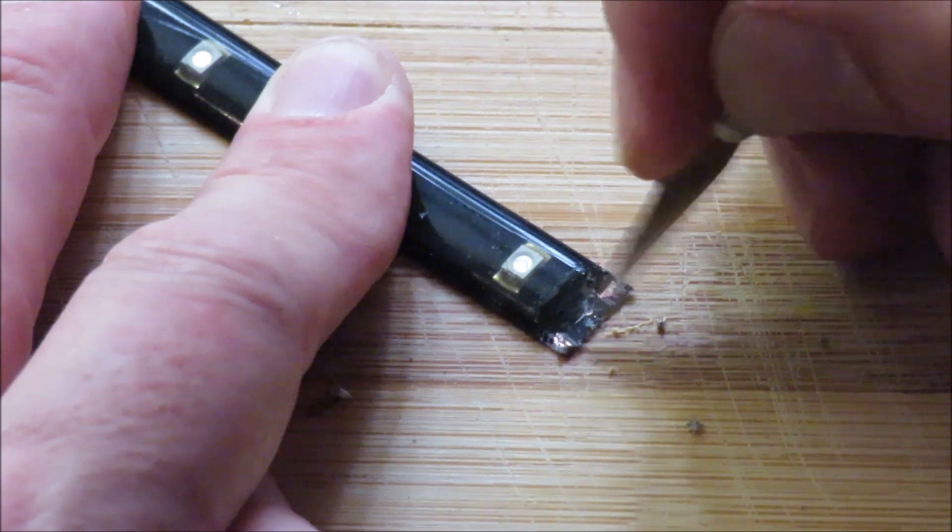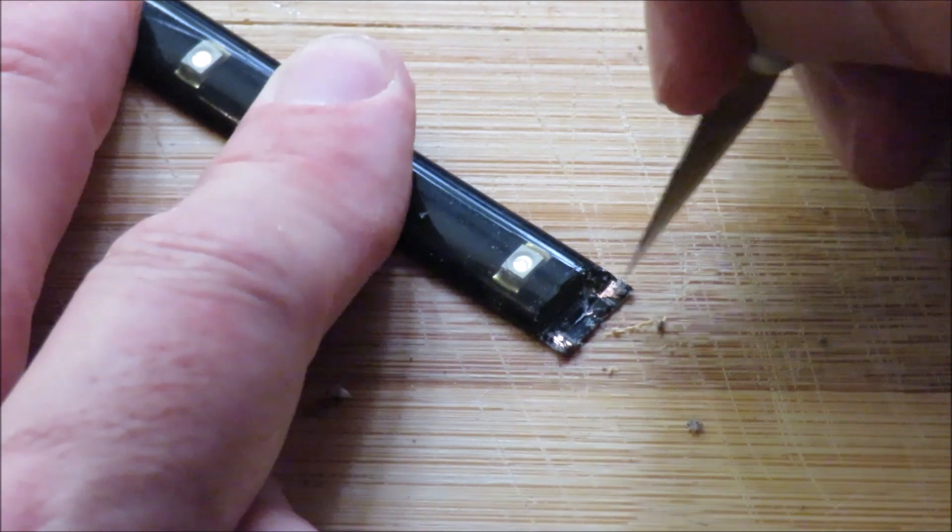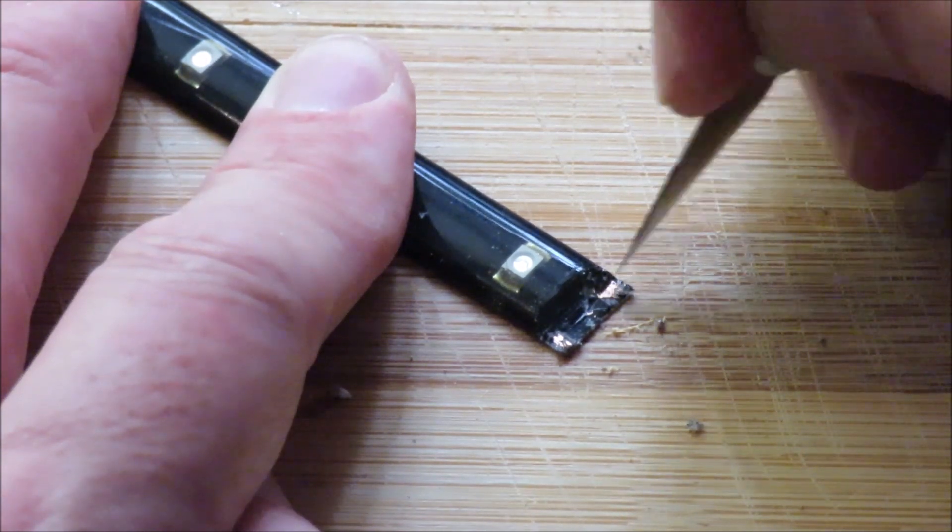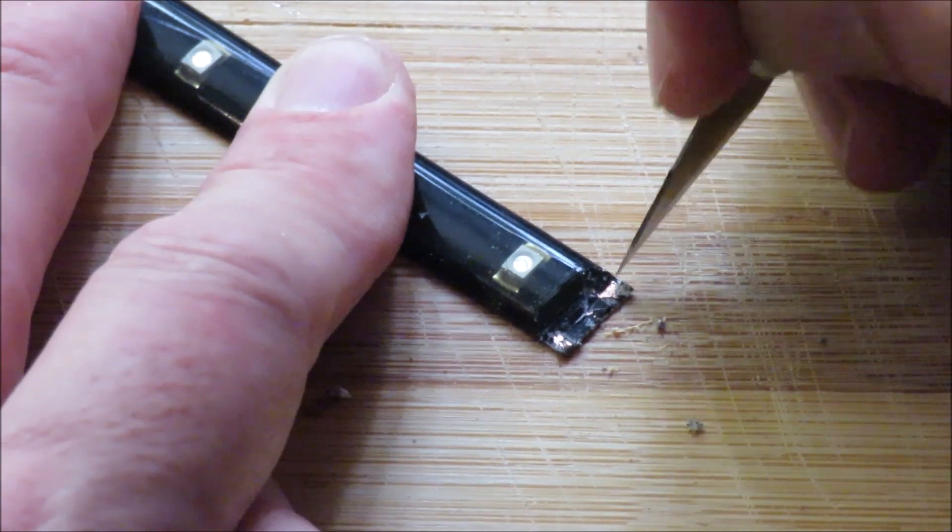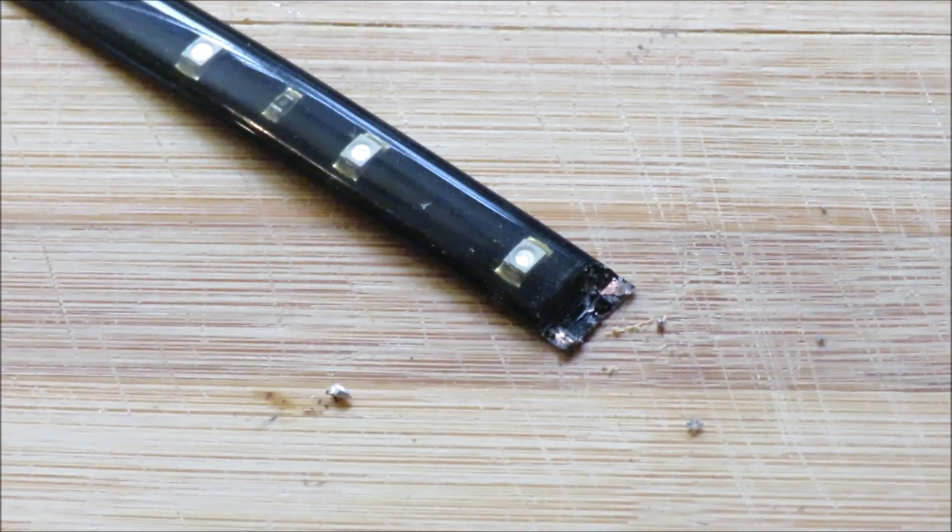Now when you put your soldering iron on this thing it's actually going to burn some of the stuff away as well. So you don't really have to worry too much about that as long as you know which side is positive and which side is negative.